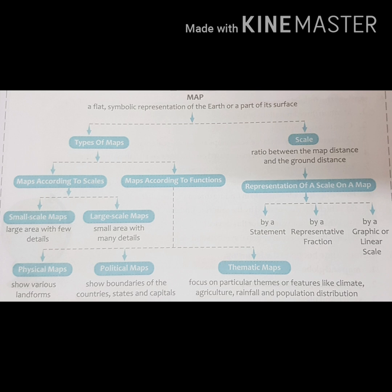In the last video I explained about the two types of maps on the basis of scale: large-scale and small-scale maps. Now in this video I am going to tell you about maps on the basis of content. On this basis, maps are divided into three parts: physical map, political map, and thematic map.